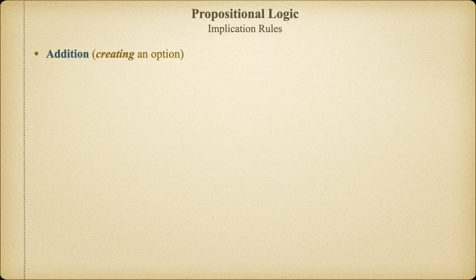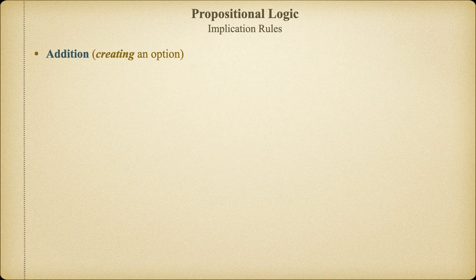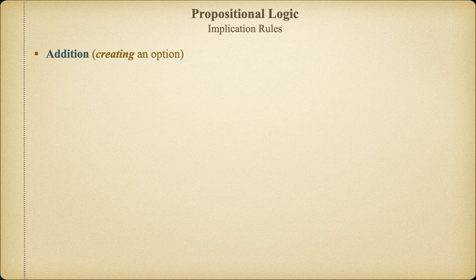In the last video, we learned how to eliminate an option using the disjunctive syllogism. Since disjunction tells us that at least one of the two options should be true, if we eliminate one of the options, then the other has to be true. The rule of addition, which we're introducing here, works in exactly the opposite way. If I have a proposition which is assumed to be true for the purpose of demonstrating validity, I could add anything whatsoever to that proposition as long as I use the wedge.